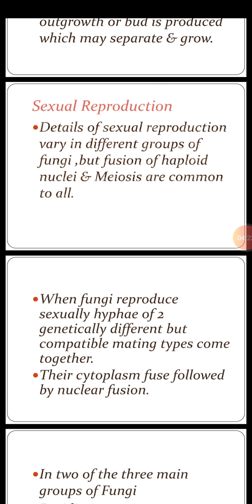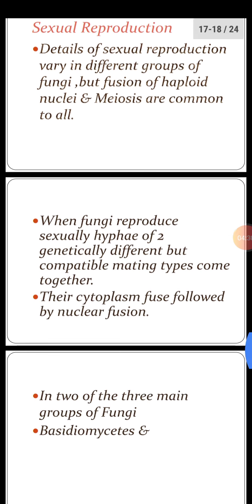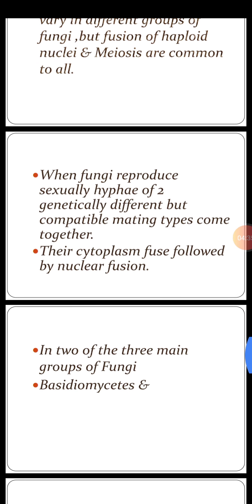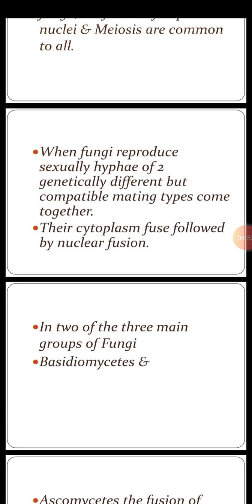Now, sexual reproduction — the second method. Details of sexual reproduction vary or differ in different groups of fungi, but fusion of haploid nuclei and meiosis are common to all, so haploid spores are produced with half the number of chromosomes. When fungi reproduce sexually, hyphae of two genetically different but compatible mating types come together — compatible meaning capable of living together — and their cytoplasm fuses, followed by nuclear fusion.